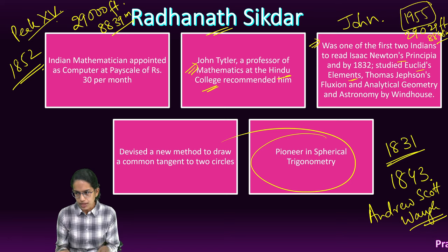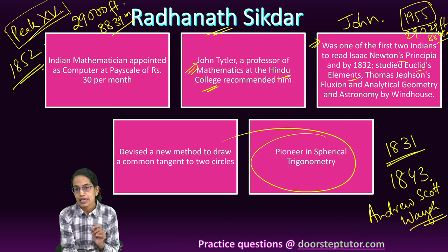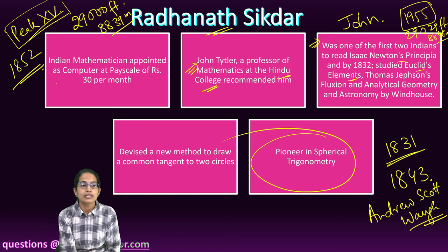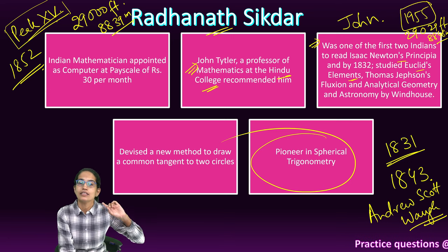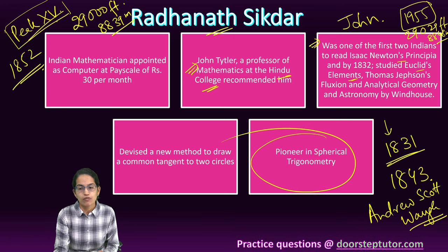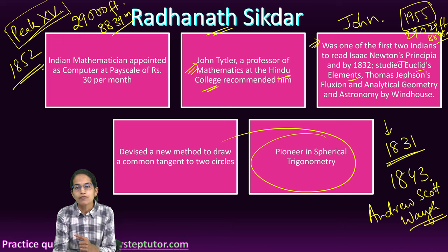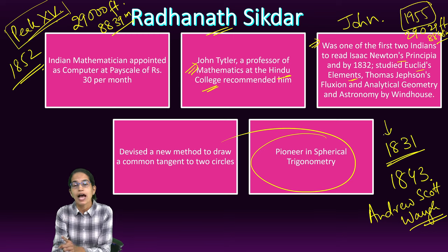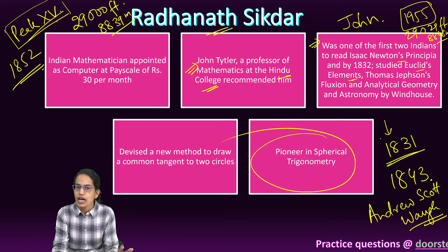It was believed that Radhanath Sikdar had discovered the peak correctly. Andrew Scott Waugh declared this the tallest mountain ever discovered — Peak 15 — and proposed it should be named after the previous Surveyor General, George Everest. Thus, it was named Mount Everest, even though the discovery and all the calculations were done by Radhanath Sikdar.